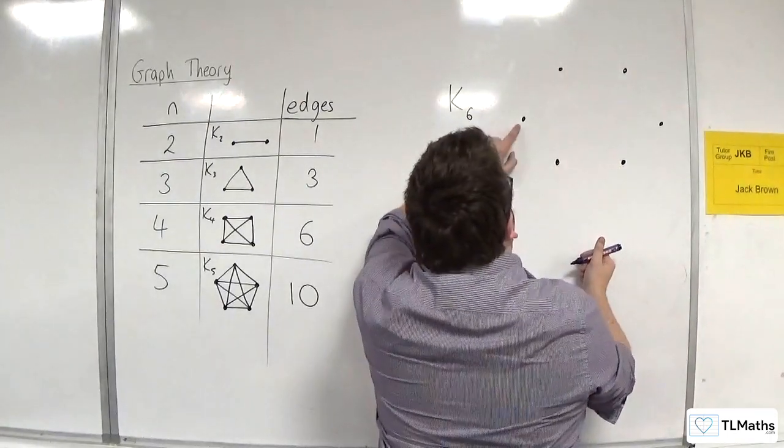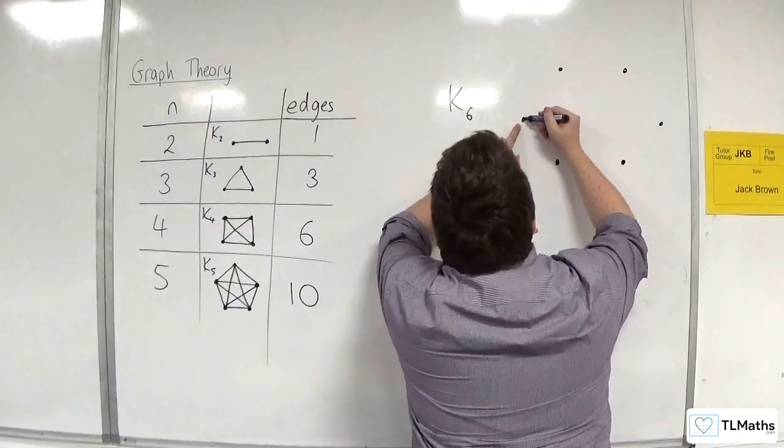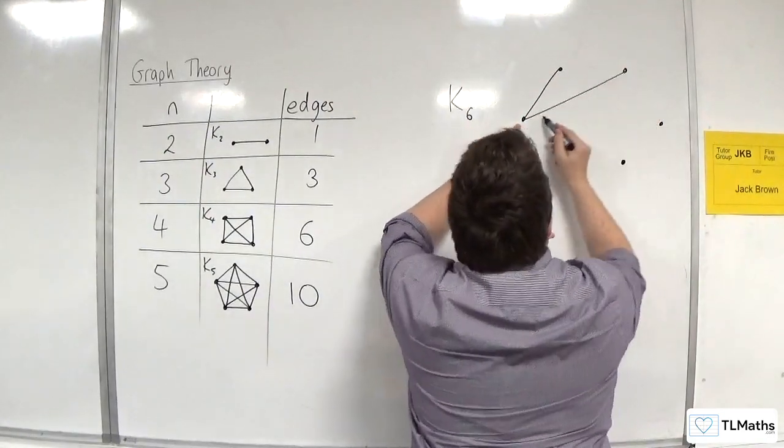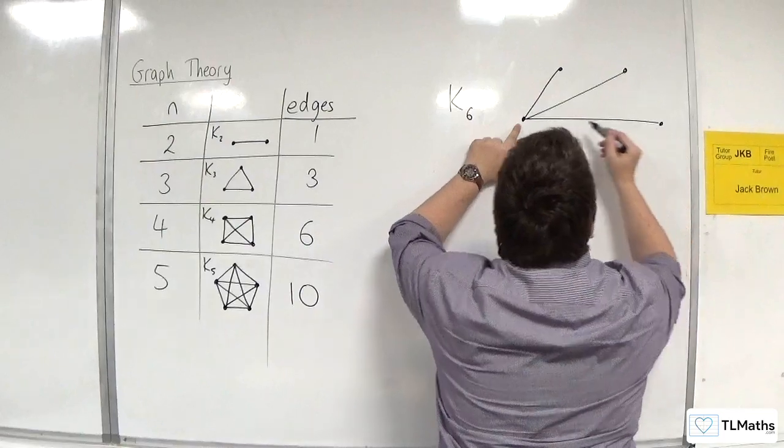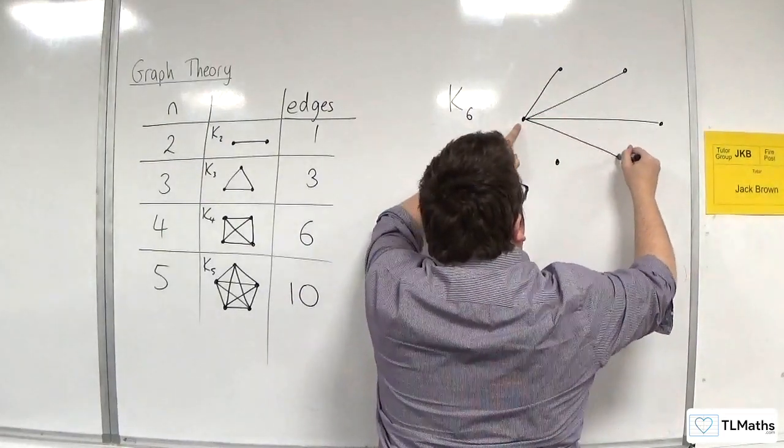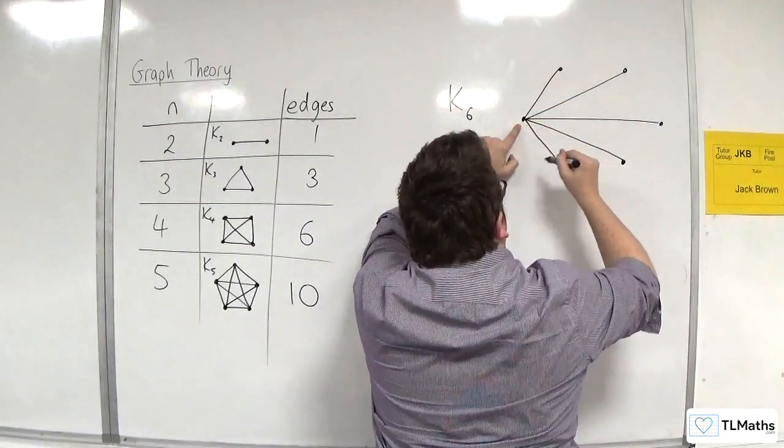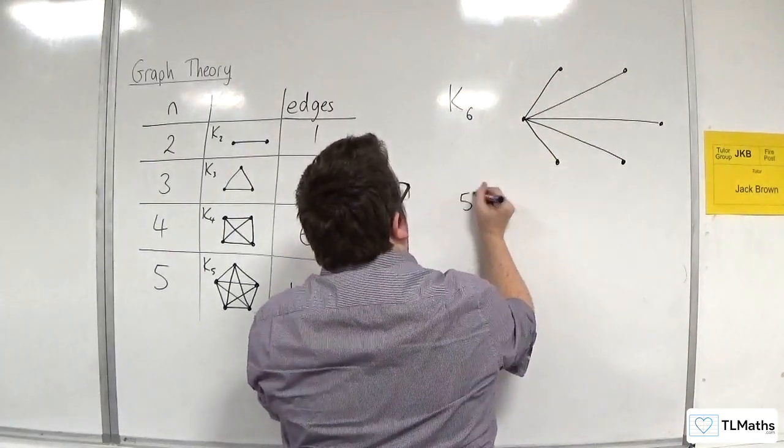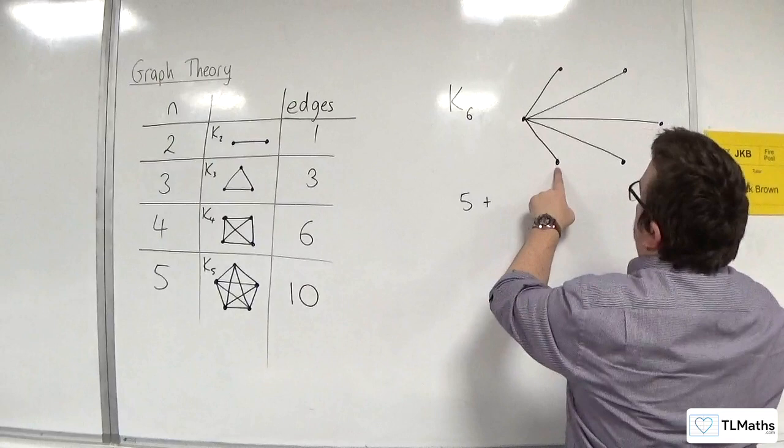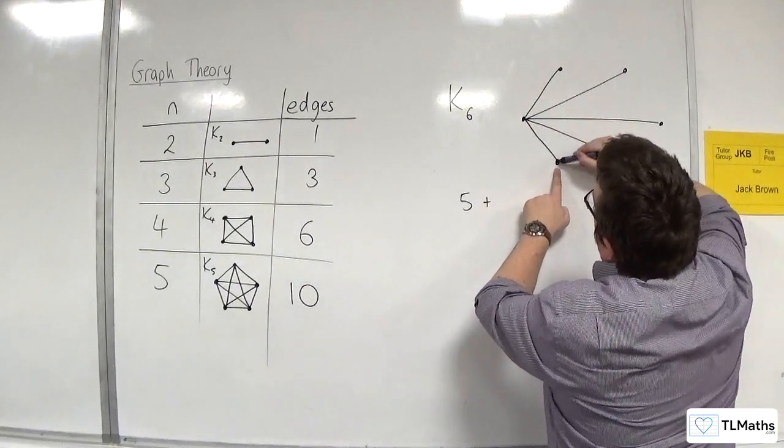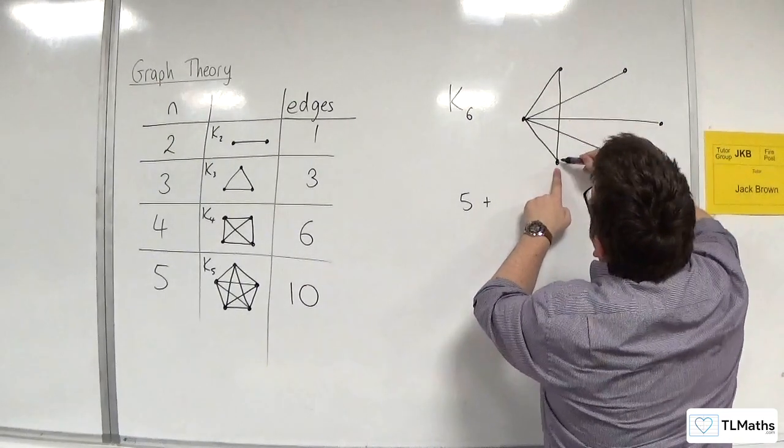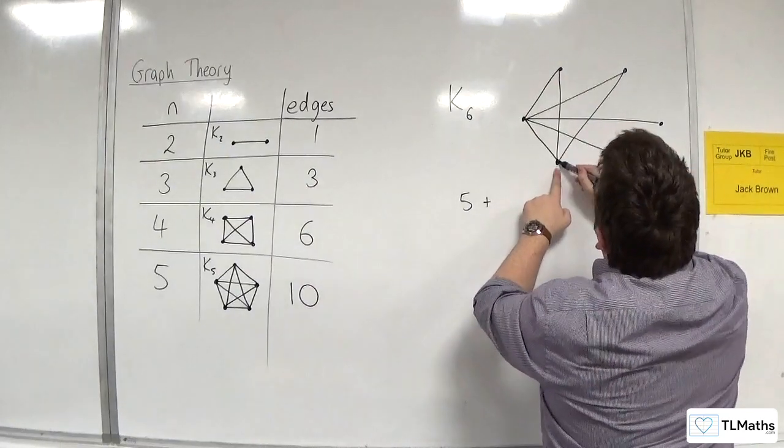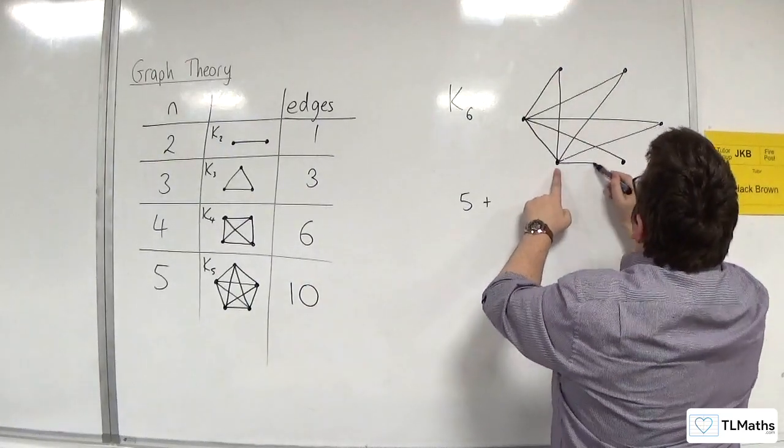So, I'm going to start with this vertex here. 1, 2, 3, 4, 5. So, we've got 5 plus. Now, from this node, we've already connected those two. So, we're going to go 1, 2, 3, 4.